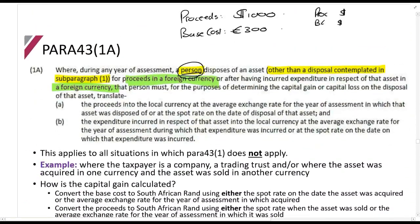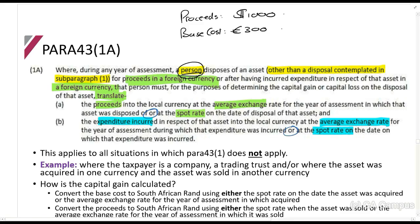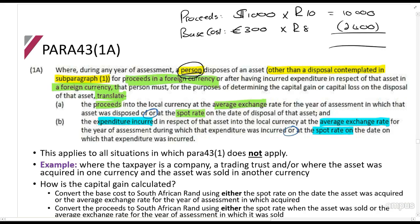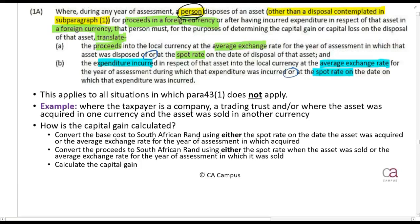What do we do then? The proceeds must be translated to local currency at the average exchange rate or the spot rate. And then the expenditure incurred — so this is the base cost — must also be converted at the average exchange rate or the spot rate. So when these items are in different currencies, you convert each one by multiplying by the applicable rand exchange rate. For example, if the rate is 10 and 8 respectively, this gives you 10,000 rands and 2,400 rands, and then you calculate the capital gain in rands. That's basically what paragraph 43 requires.